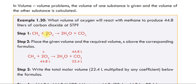Step 1: Write the balanced chemical equation. Methane reacts with oxygen to give water plus carbon dioxide: CH₄ + 2O₂ → 2H₂O + CO₂. This shows 2 moles of oxygen producing 1 mole of carbon dioxide gas.